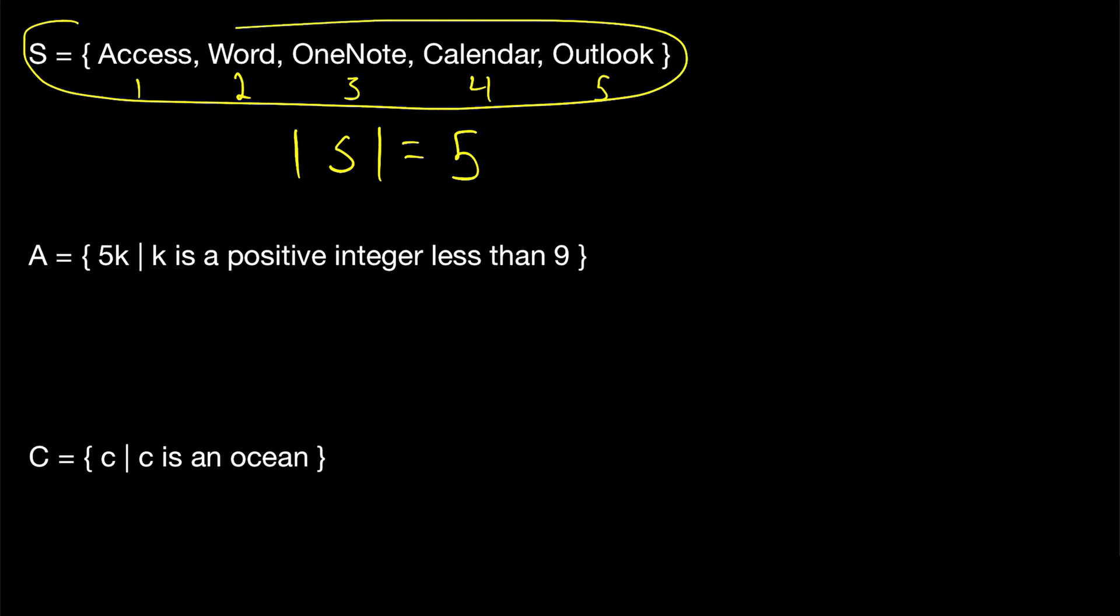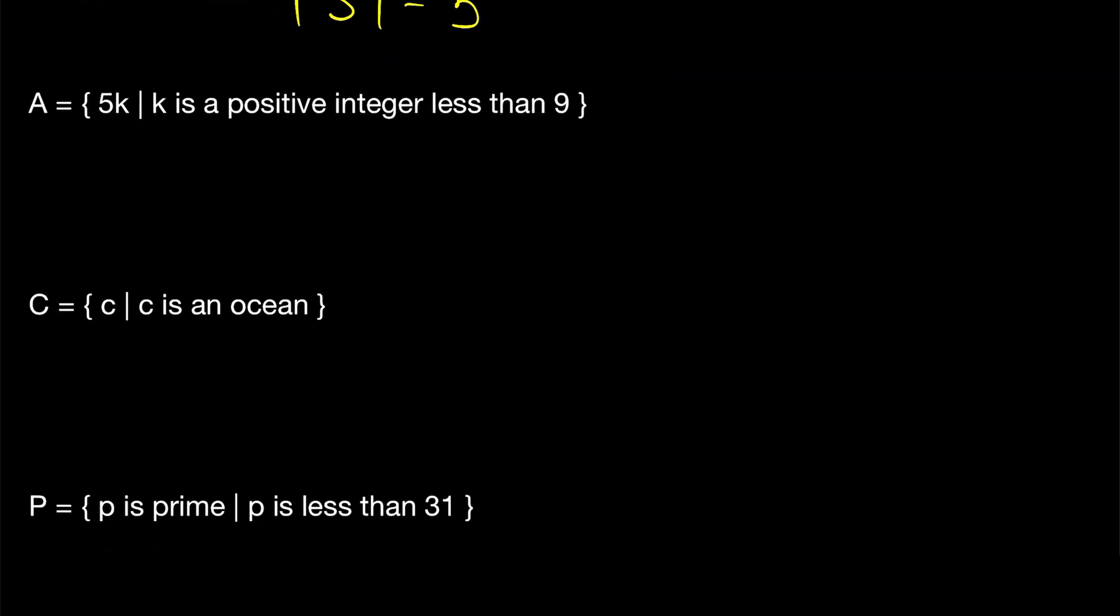Note that this is called roster notation, where a set is defined by just writing out all of its elements. When a set is written like this, its different elements will be separated by commas. However, we have to be careful, because sometimes the elements of a set themselves might contain commas. In those cases, it becomes crucial to identify where each element starts and where the element stops. I talk more about that in my lesson on identifying the elements of a set, which I highly recommend. I'll leave a link to that in the description. All right, on to the next set.